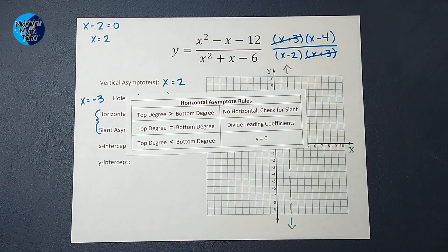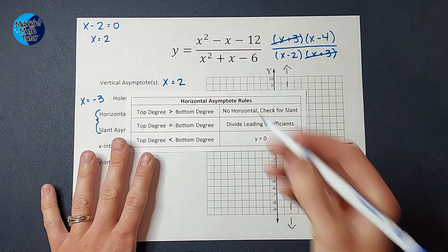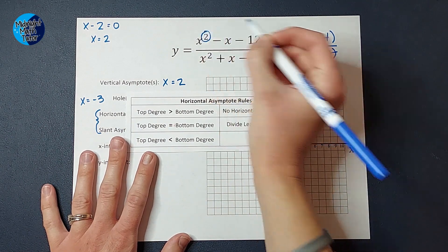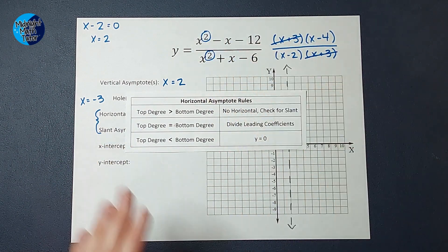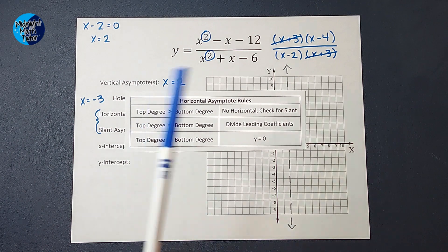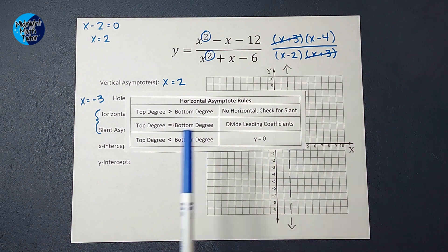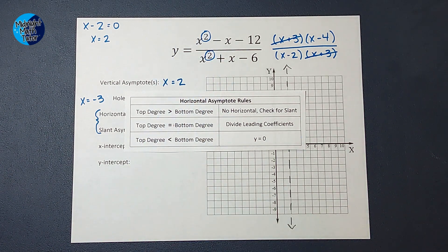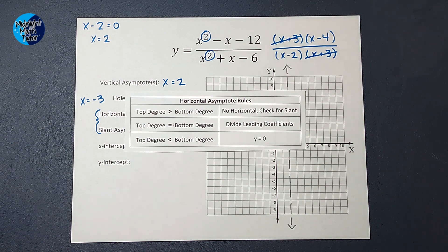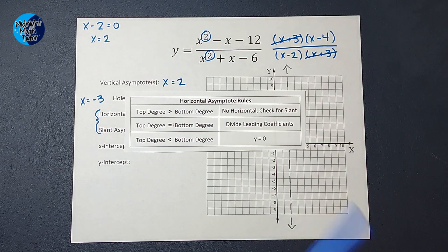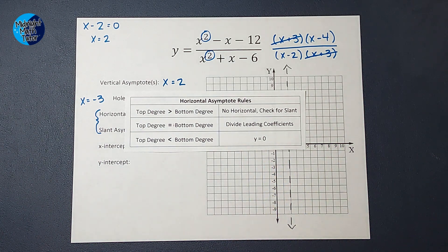All right. But these have to do with degrees, the highest exponent in our numerator and denominator. So on my numerator, it's two in my denominator. It's two, right? So if your top degree is greater than the bottom, you don't have a horizontal asymptote. You're going to check for a slant. If the degrees are equal, like they are in this example, we're going to divide our leading coefficients to get our horizontal asymptote. If the top is less than the bottom, then your horizontal asymptote is Y equals zero.